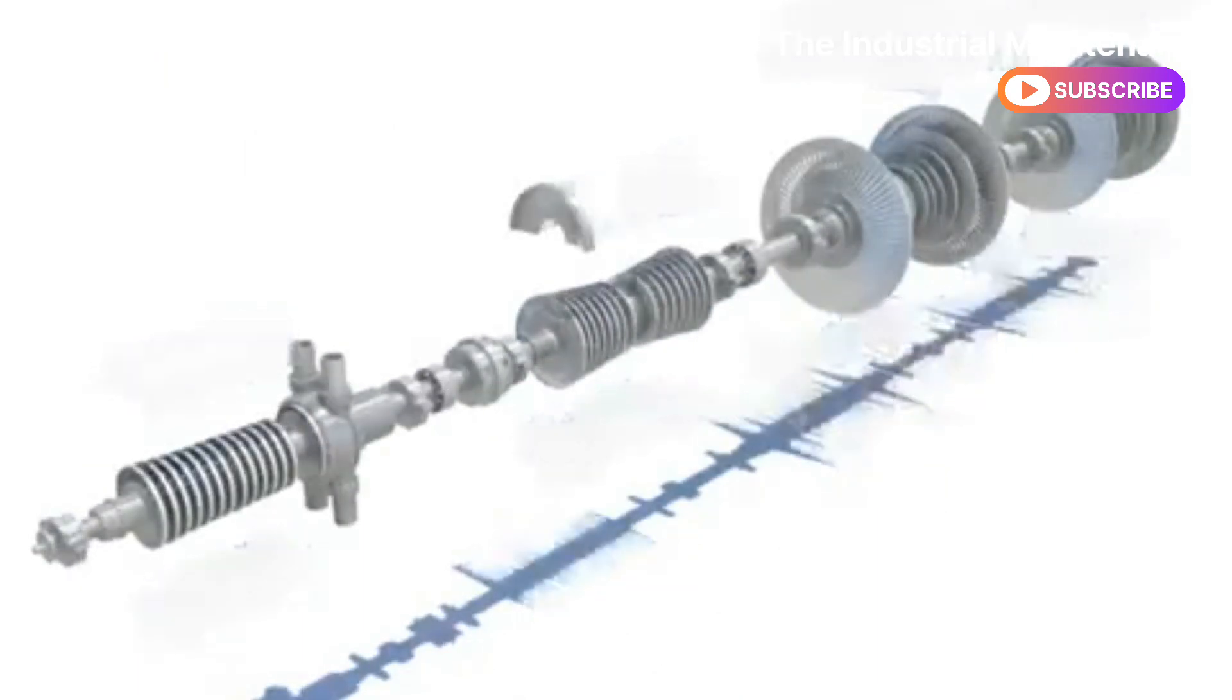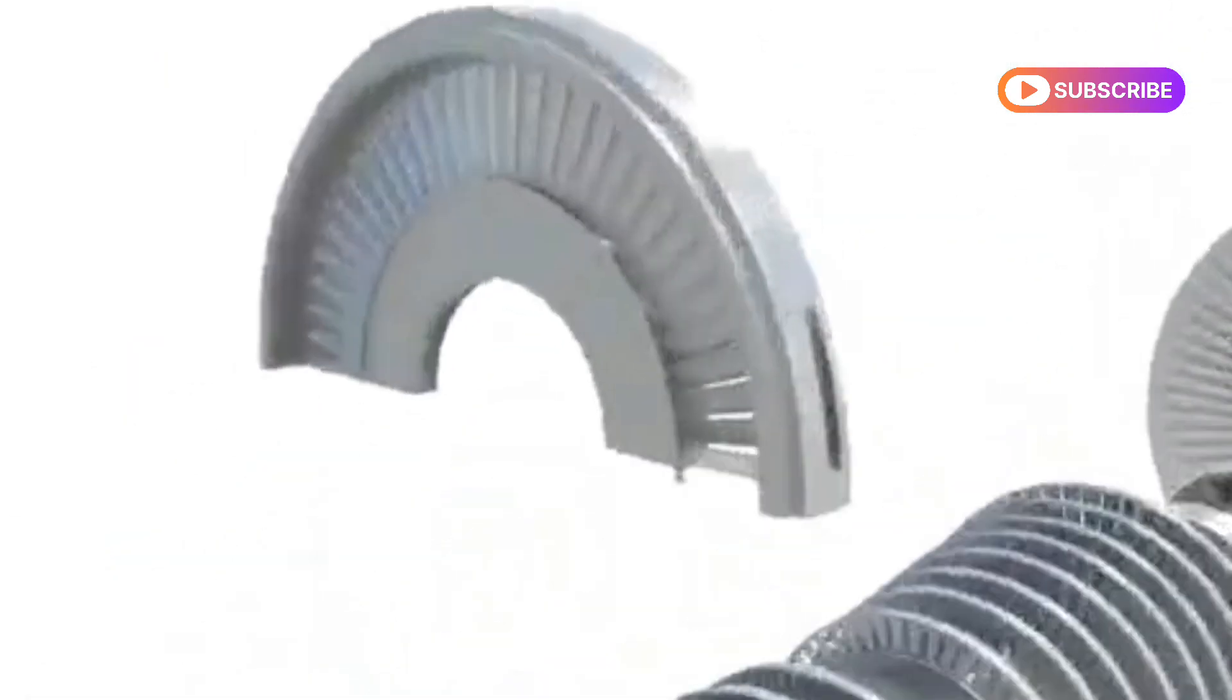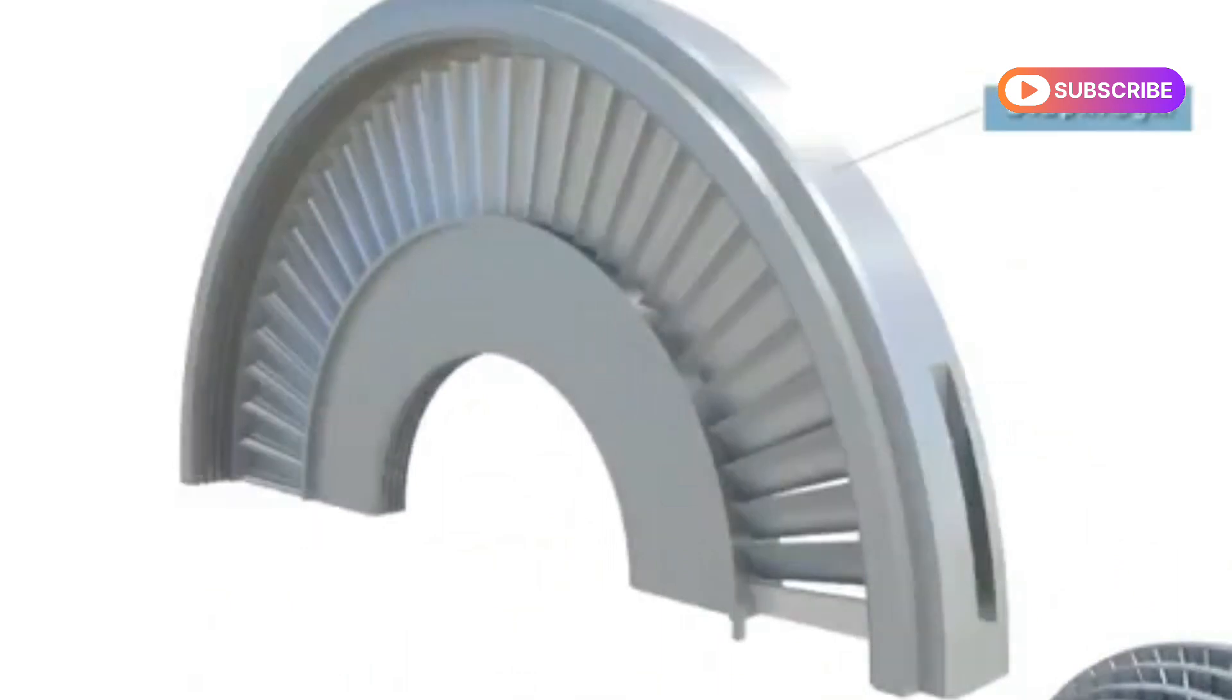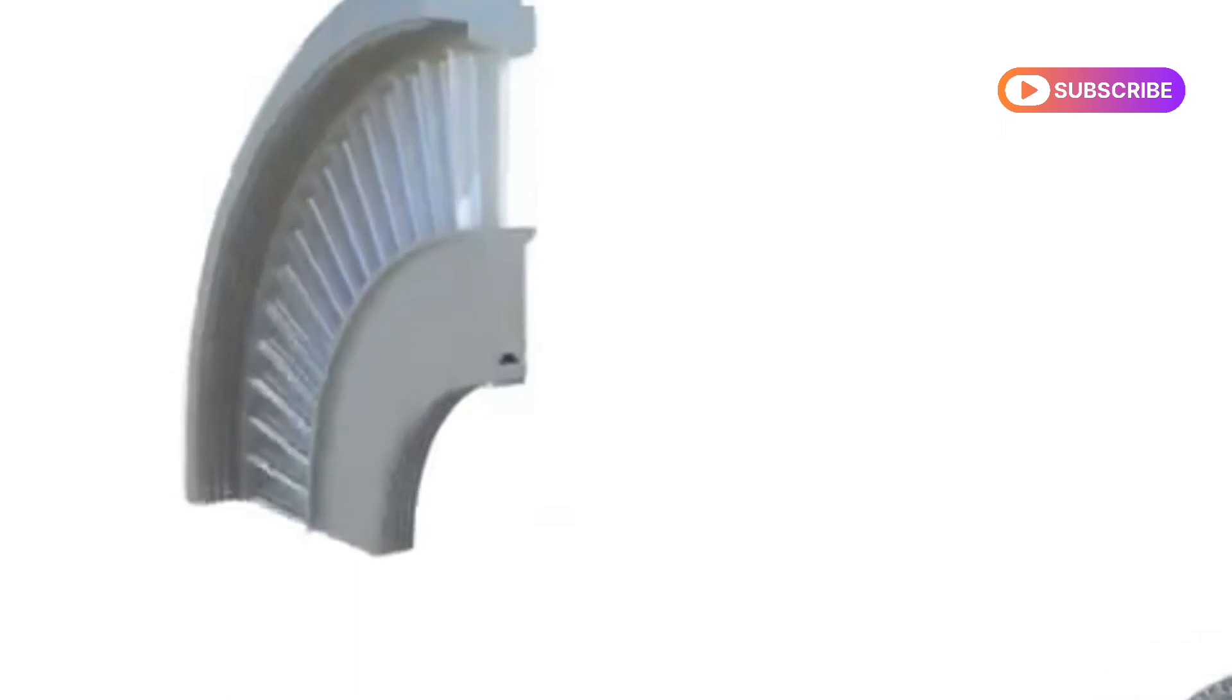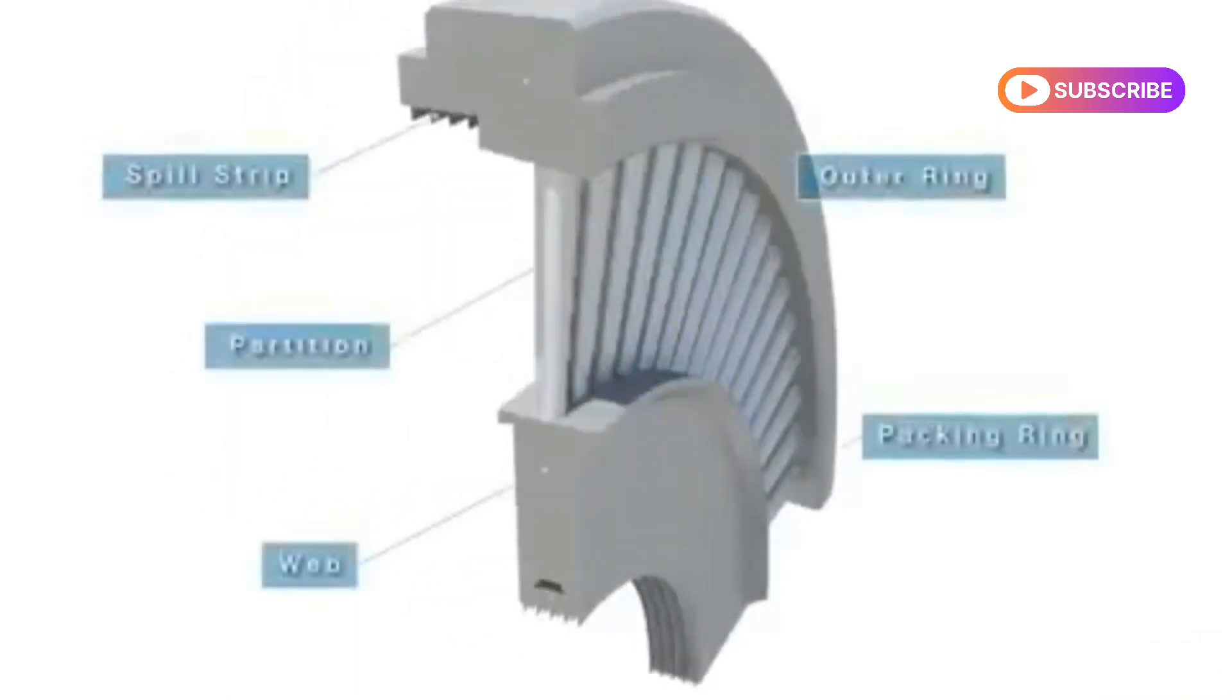The diaphragm changes thermal energy of steam into kinetic energy. The diaphragm consists of the partition, outer ring, web, spill strip, and packing ring.